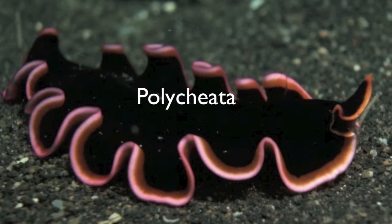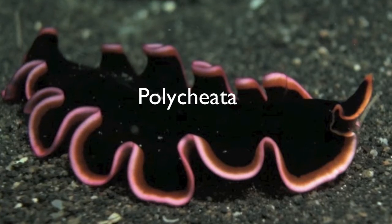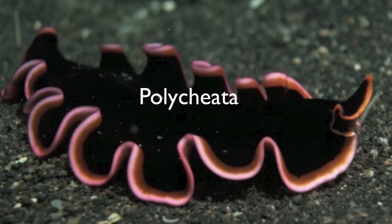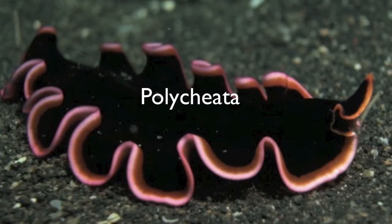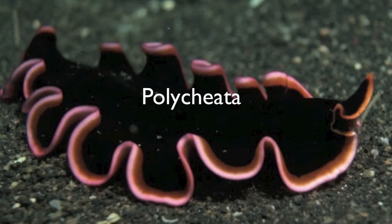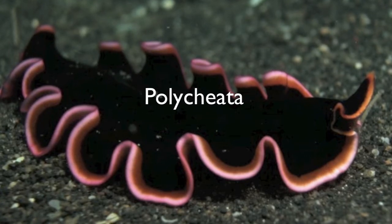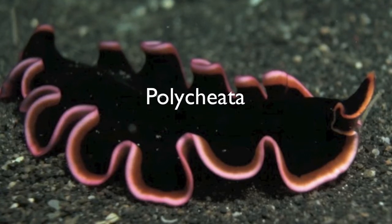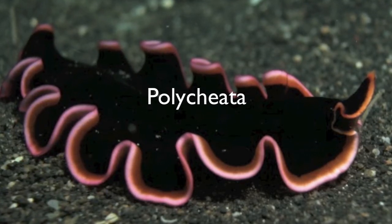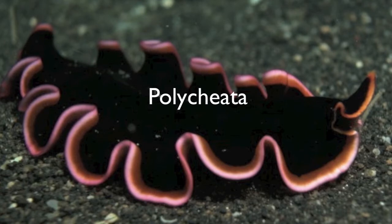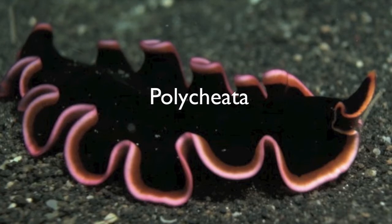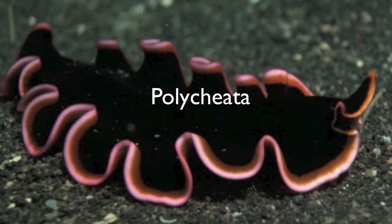Another class of Phylum Annelida is Polychaeta. They have many large bristles, live underwater, and are also free-living larvae. There are two subclasses: Errantia and Sedentaria.